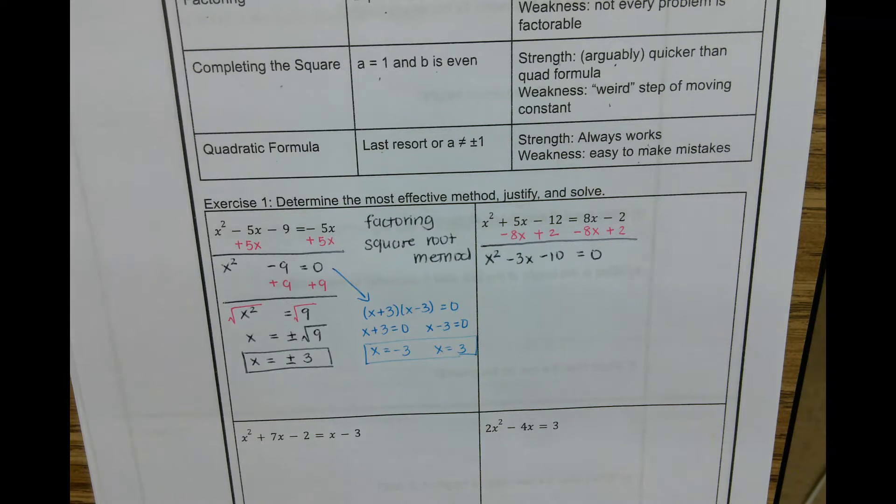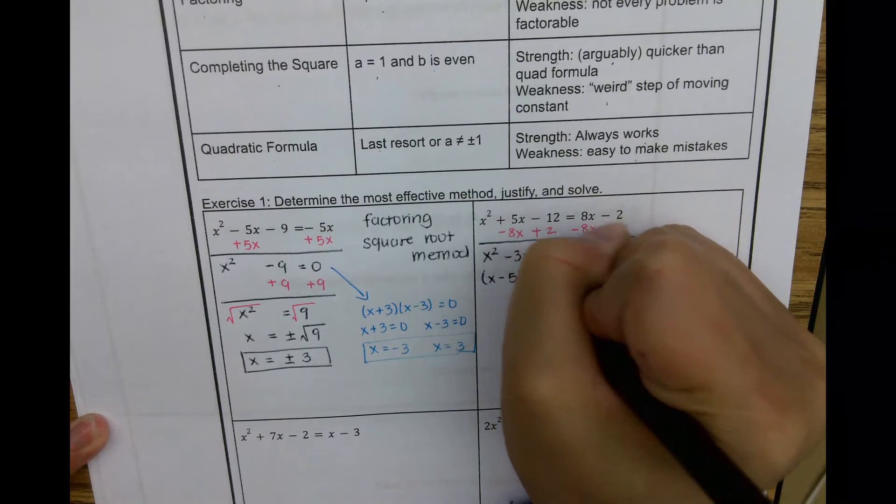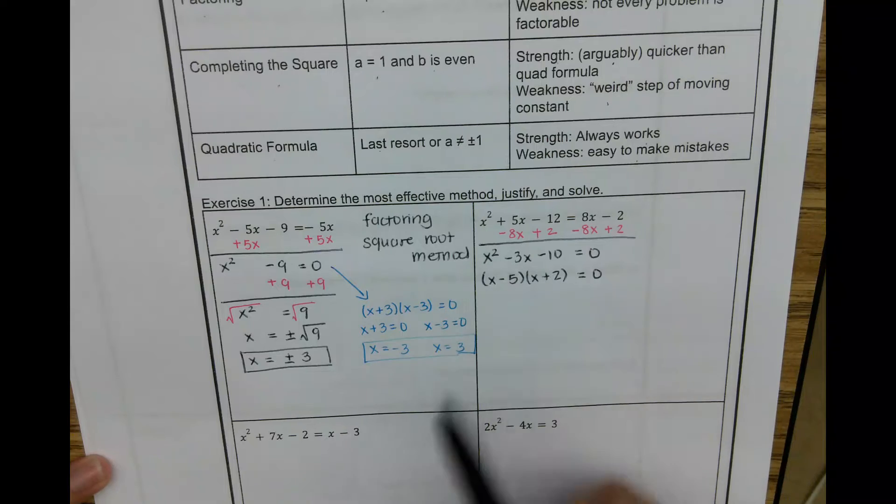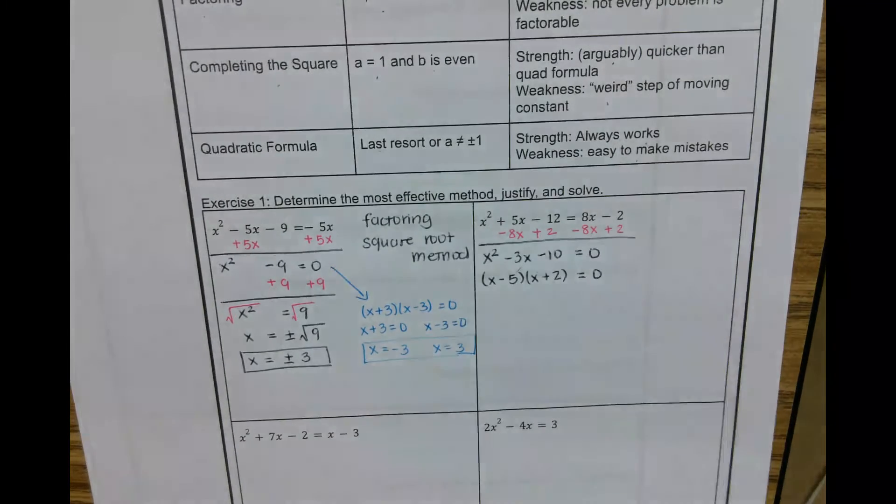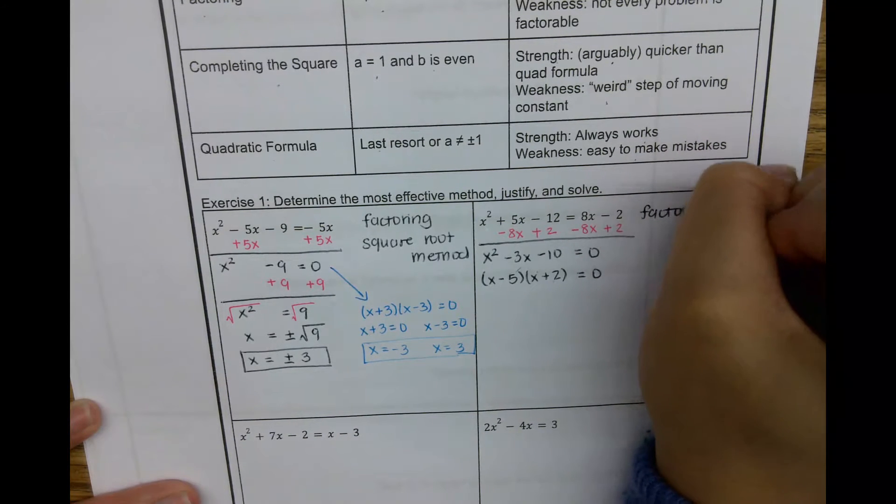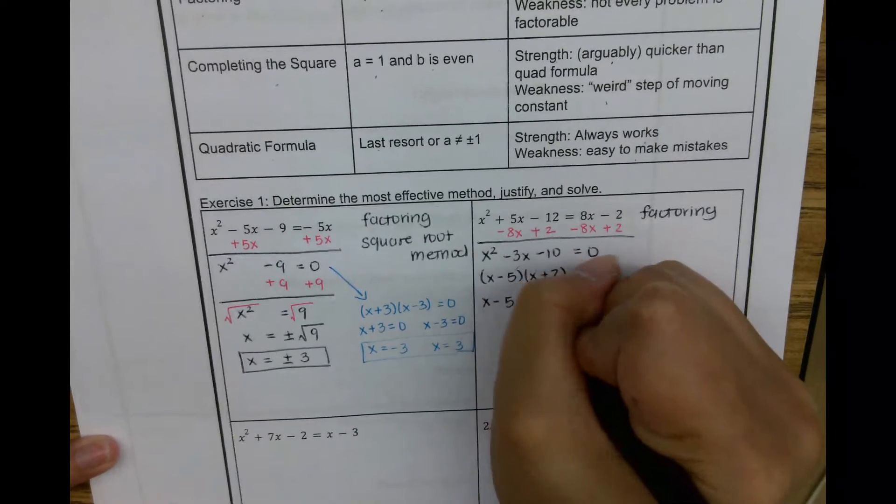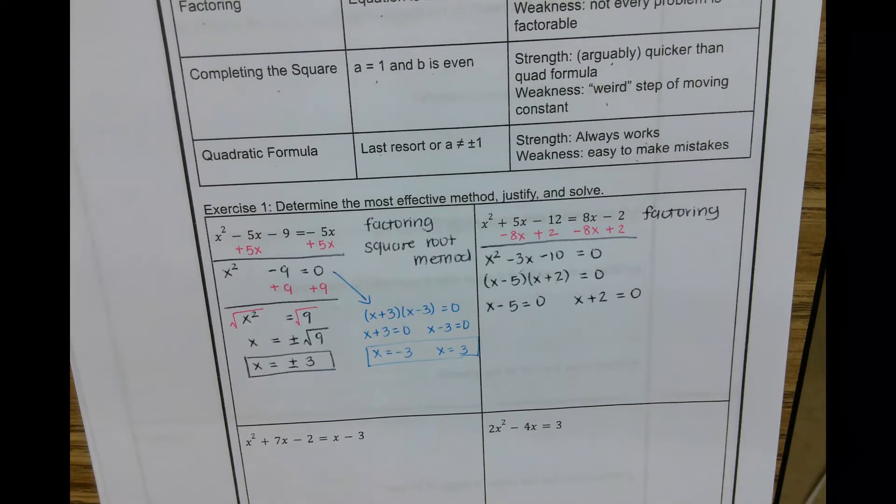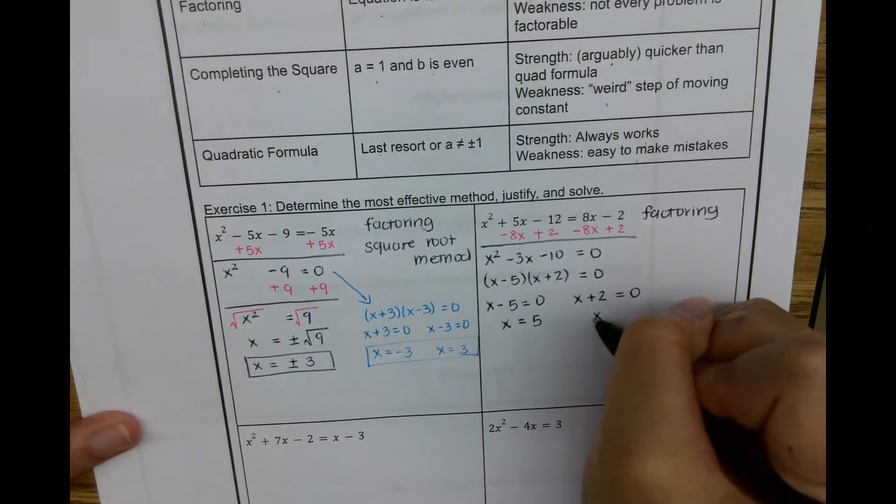Then we're going to factor. So for those of us who are quick with factoring, especially with the guess and check method, quick way to factor, this is x minus 5, x plus 2. How was I able to do it so quickly? I knew x times x would give me that x squared. Negative 5 and 2 would give me the negative 10. Then the negative 3 comes from the negative 5x plus 2x. So for those of us who are quick with factoring, factoring here was a great method. Then all I have to do, using the zero product rule, is that if I'm multiplying two things and it equals 0, one of those factors has to be 0. So either x minus 5 equals 0 or x plus 2 equals 0, which means x equals 5 and x equals negative 2.